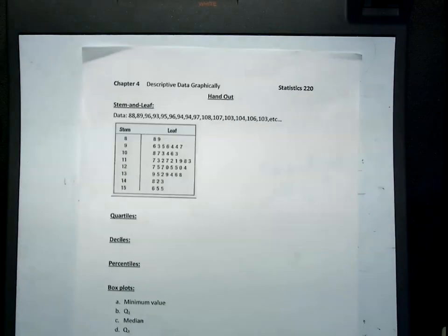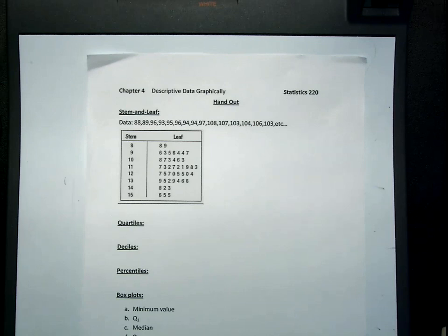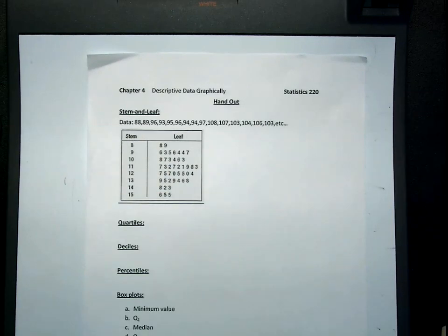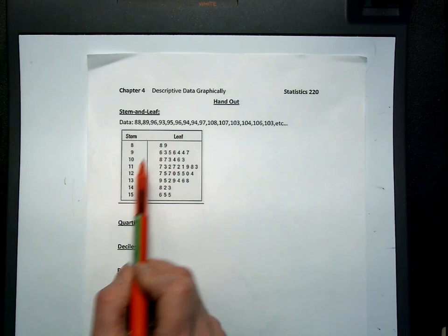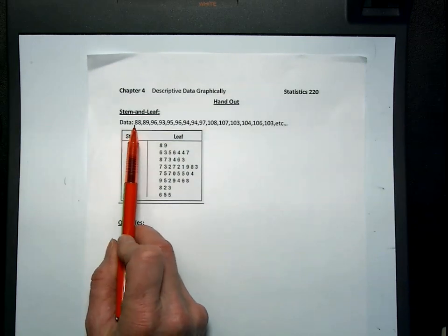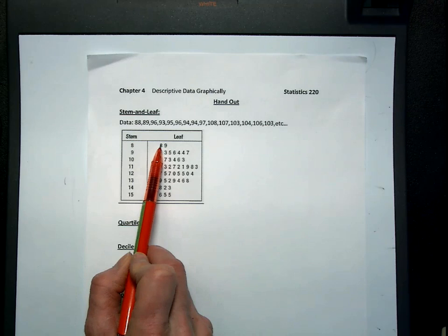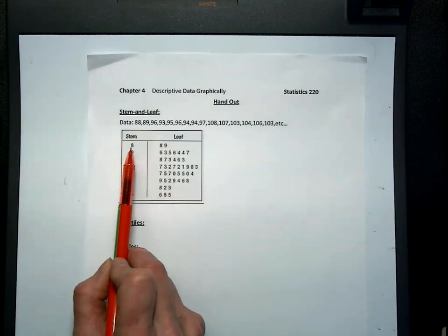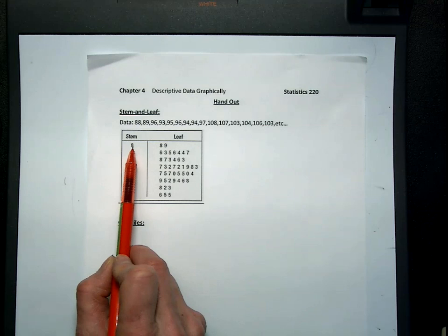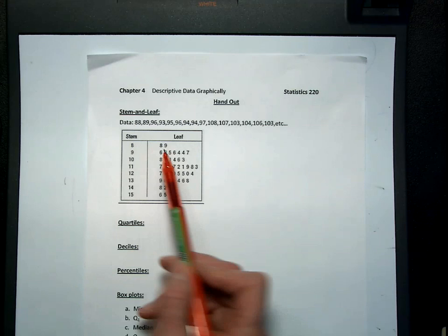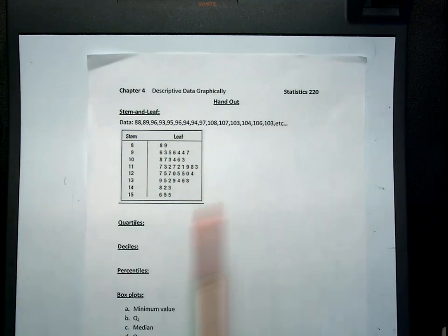So here's your handout and here's a stem. This is a stem and leaf plot. What we've done is every data point we've separated into two parts, a stem and a leaf. For example, data point 88—the first 8 is here and the second 8 is here. The next data point was 89, so it would be in the same class as this first one. We do that with our entire data set.